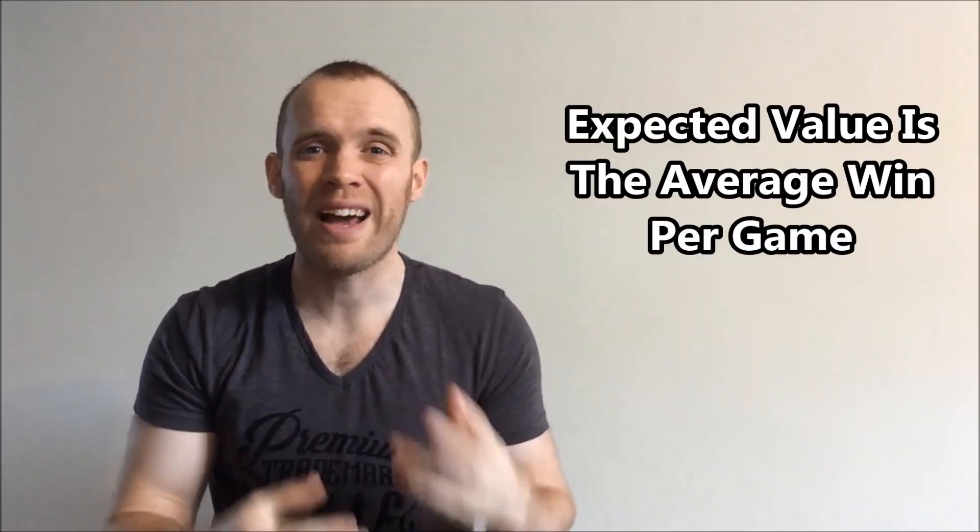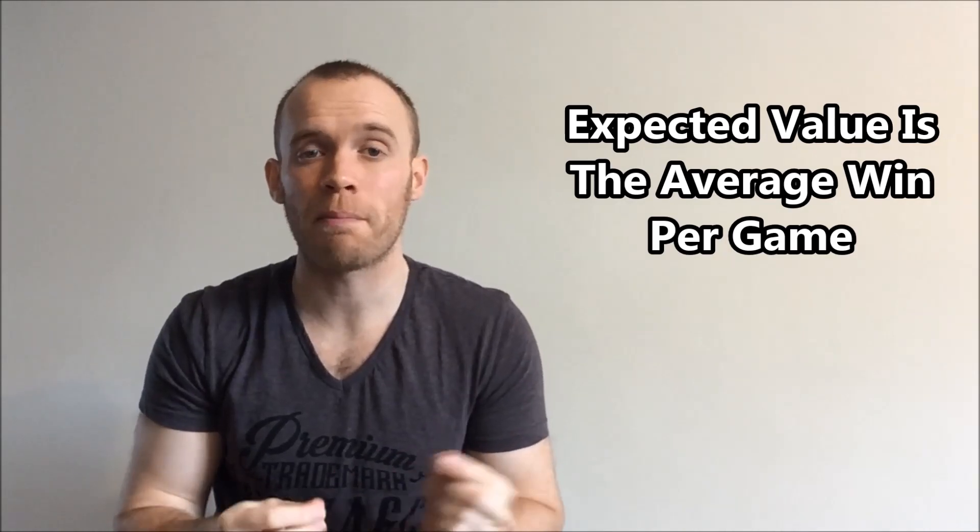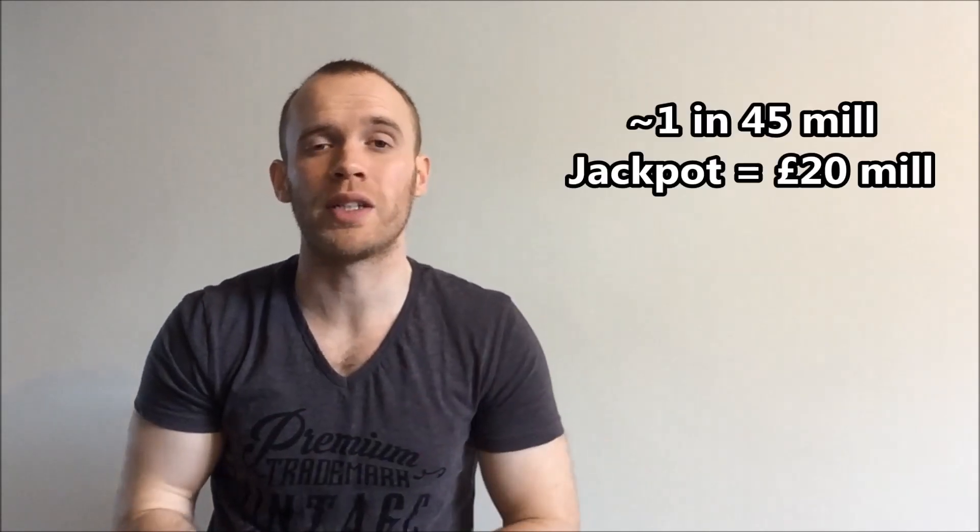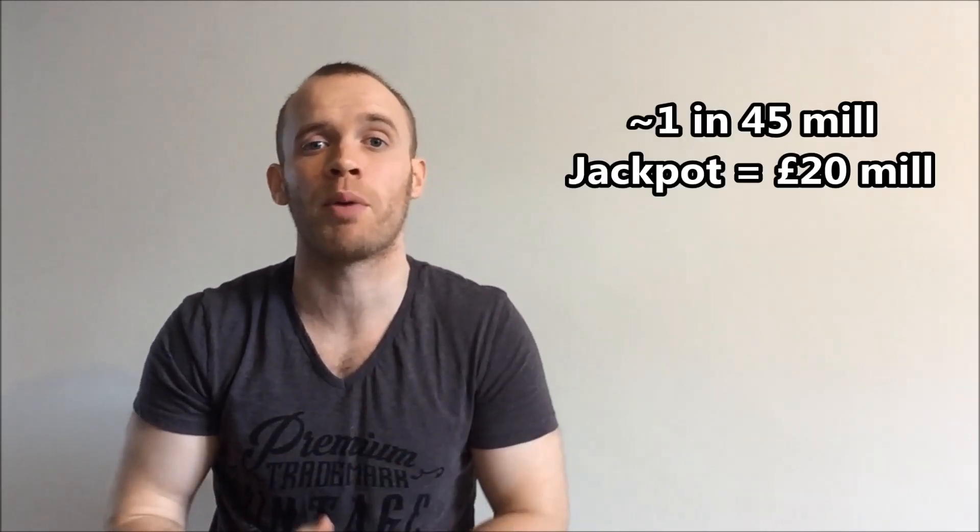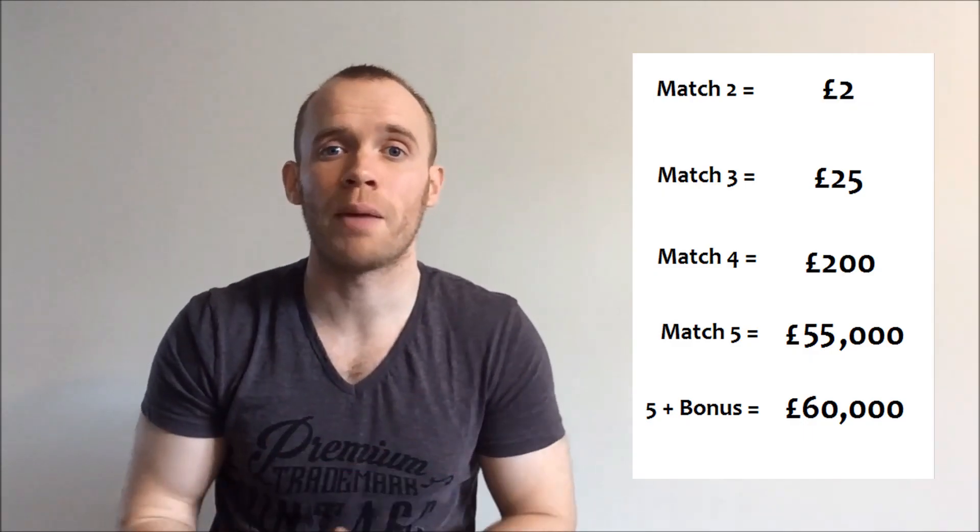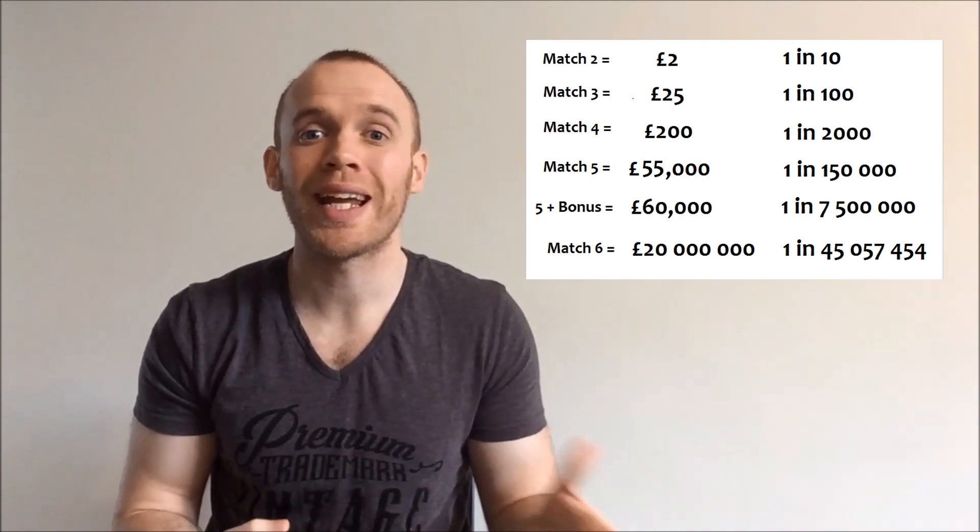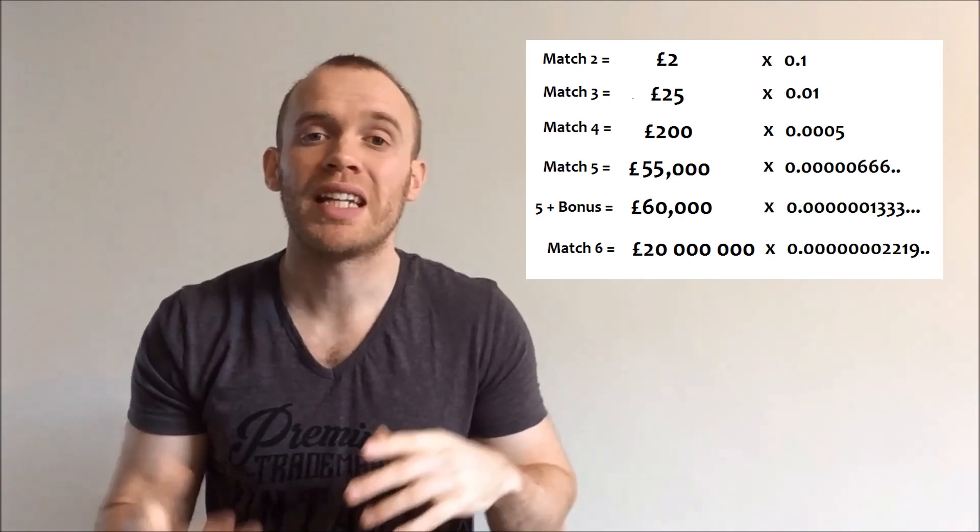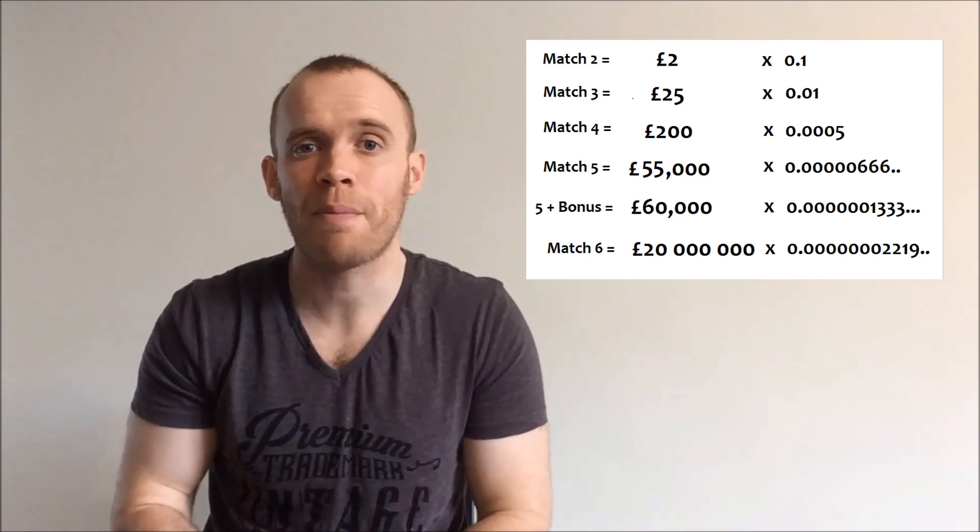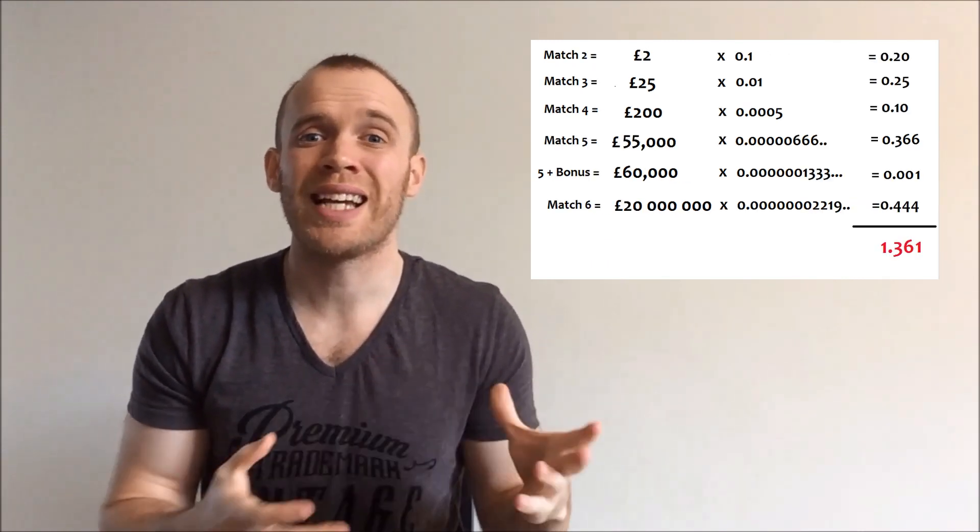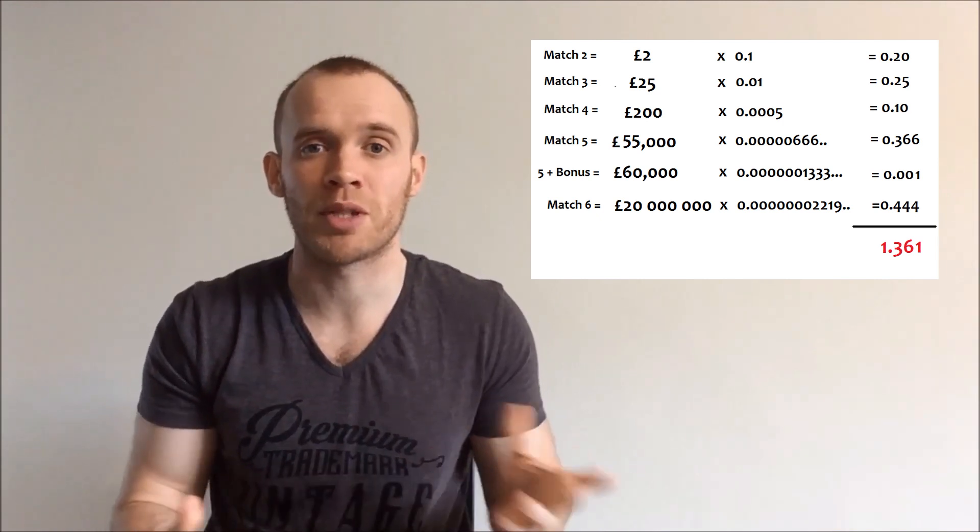What we can do now is work out something called the expected value. That is the average amount of money you would expect to win per go if you played the lottery an infinite number of times. So you've got roughly one in 45 million chance, and we'll call the jackpot 20 million. Based on the recent draws, I've picked some example payouts for the other numbers that you can match.